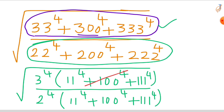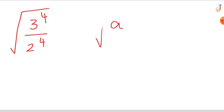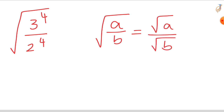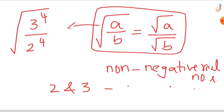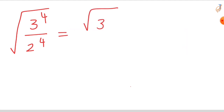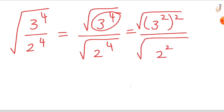The common bracket (11^4 + 100^4 + 111^4) in the numerator and denominator cancels out. You are left with the square root of 3 raised to the power of 4 over 2 raised to the power of 4. This is in the form of square root of (a over b), which we can write as square root of a over square root of b — valid for non-negative real numbers. Since 2 and 3 are non-negative, we can apply this formula.